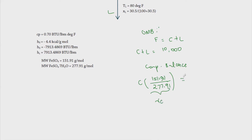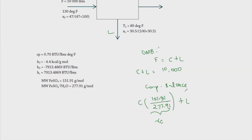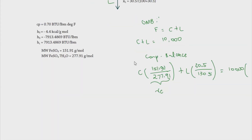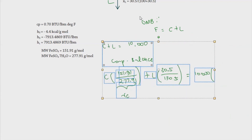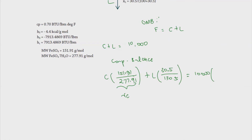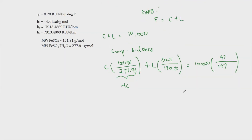For X sub L, we use the equilibrium solubility: X sub L = 30.5 over 130.5. The component balance is then: C × X sub C + L × X sub L = F × X sub F = 10,000 × (47/147). So we have 47 over 147 on the right-hand side. This gives us two equations and two unknowns, C and L.